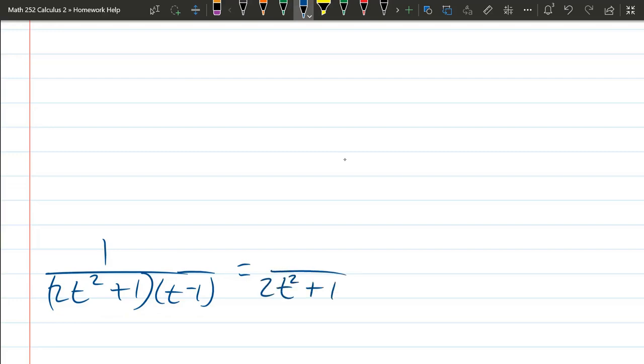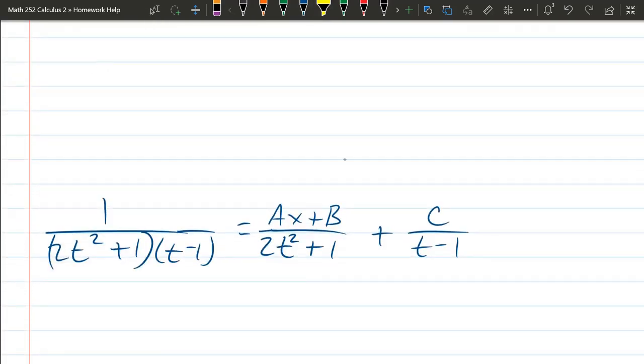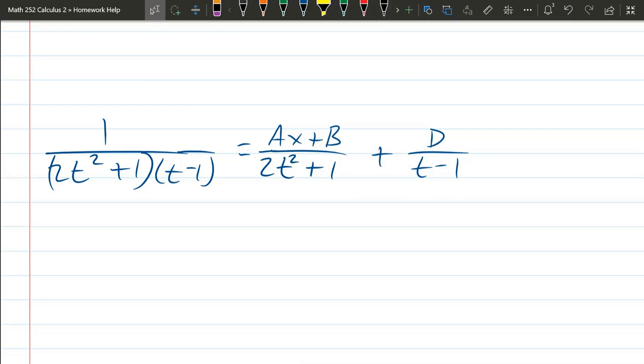So we're going to decompose this: 2t² + 1 plus t - 1. I'm not covering everything about decomposing fractions, but you get one term for each factor, basically. And above each factor, you have a generic polynomial of 1 degree lower. So I had degree 2 here from the square, and so above it is a linear polynomial, degree 1. Here I have degree 1 polynomial, so above it is a degree 0, which would be a constant.